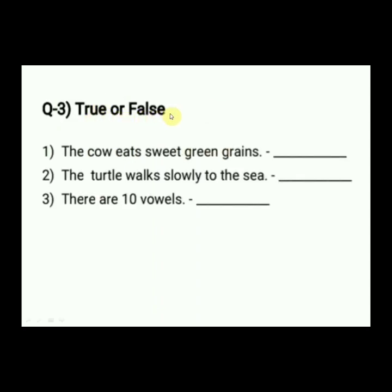Now see question number 3: True or False. You have to think whether the given sentence is a true or false statement, and write that answer in the blank. You have to write the full spelling — if true, write T-R-U-E, and if false, write F-A-L-S-E. First: 'The cow eats sweet green grains.' Is it true or false? Write the answer in the blank. Second: 'The turtle walks slowly to the sea.' Is it true or false?